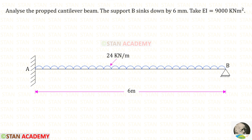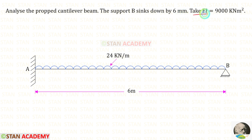Hello everyone. Today we are going to analyze this propped cantilever beam. In this beam, the support B sinks by 6 millimeters. EI is given as 9000 kilonewton meter squared.